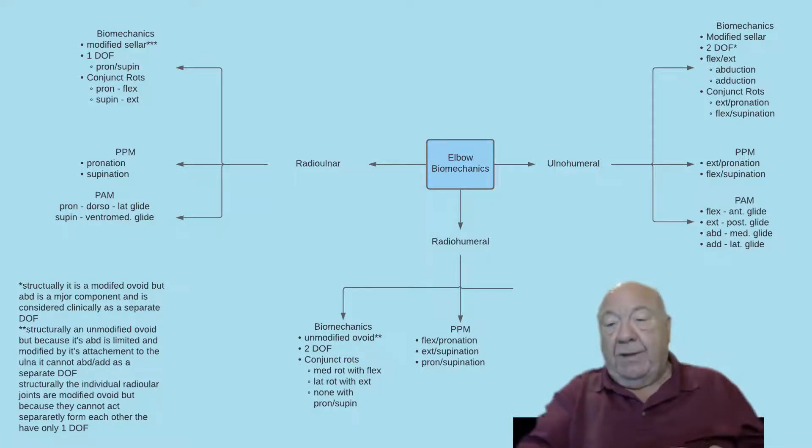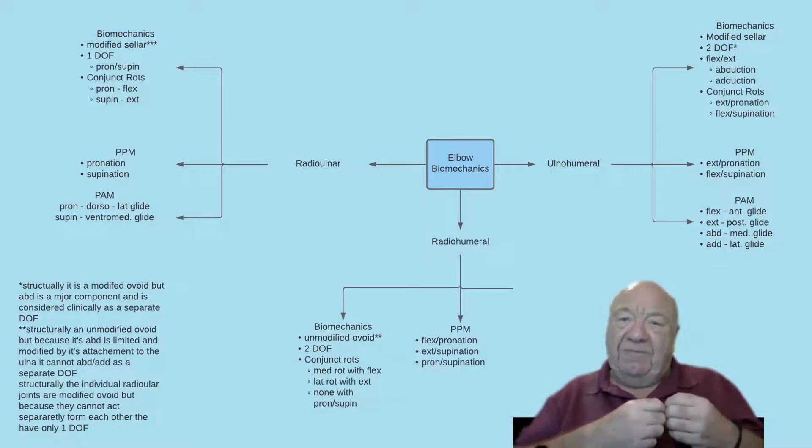However, it can't function as an unmodified ovoid with three degrees of freedom because it's attached to the ulna. So the ulna will limit its ability to go through three degrees of freedom and also modify what it does. So functionally, this is a modified ovoid with two degrees of freedom: flexion-extension and spin.